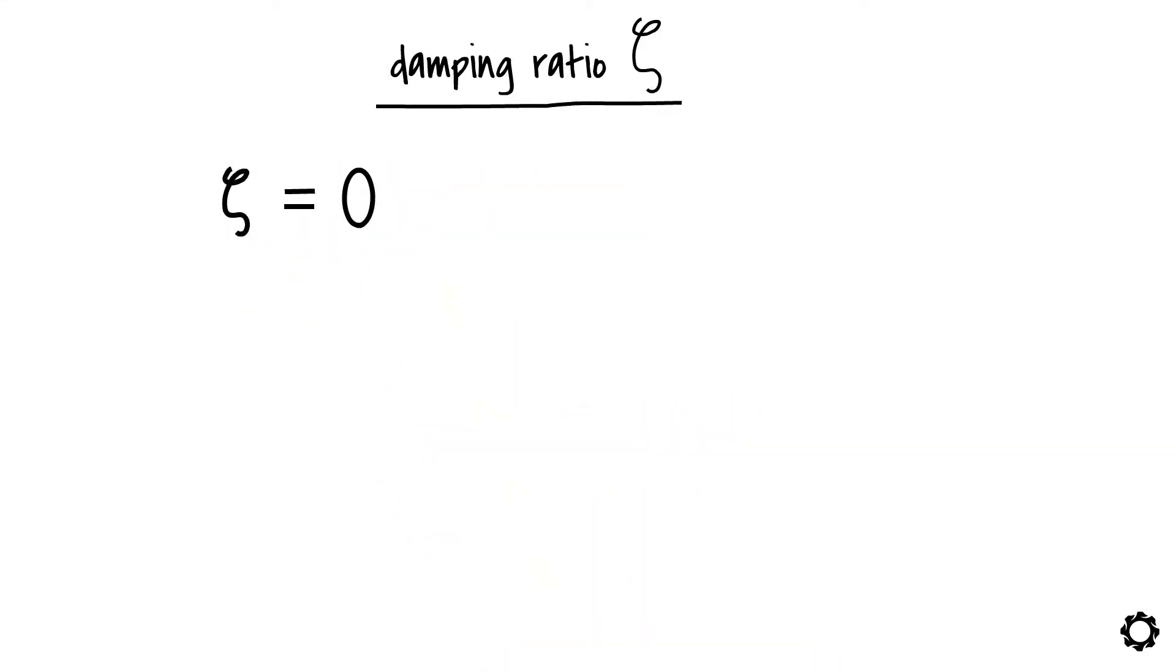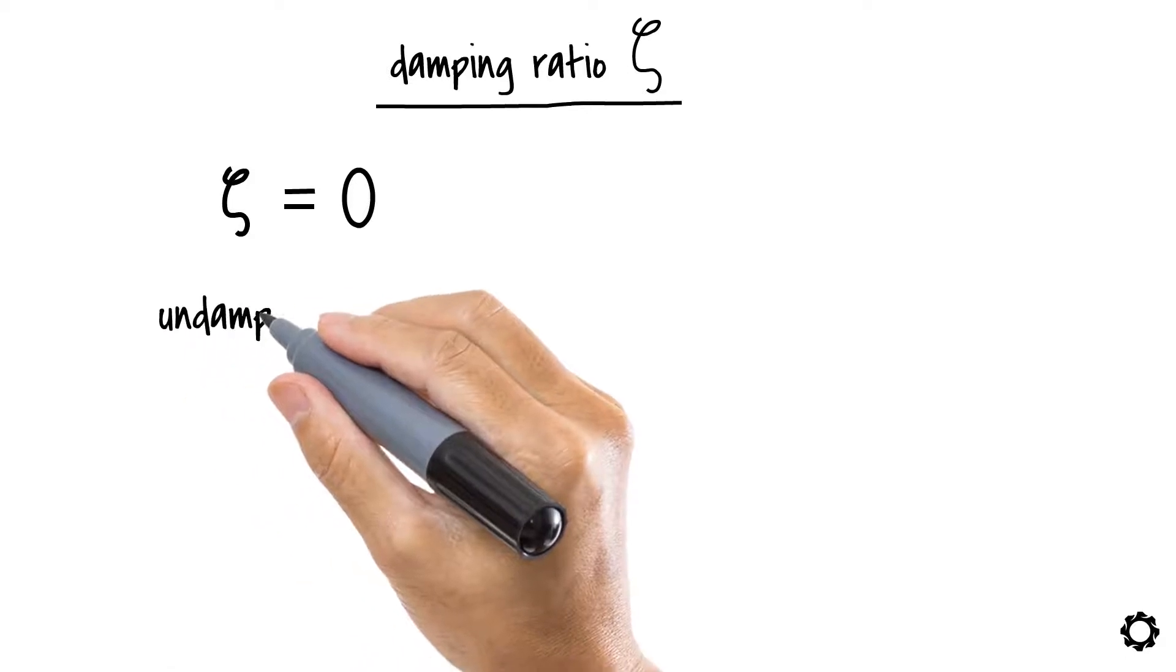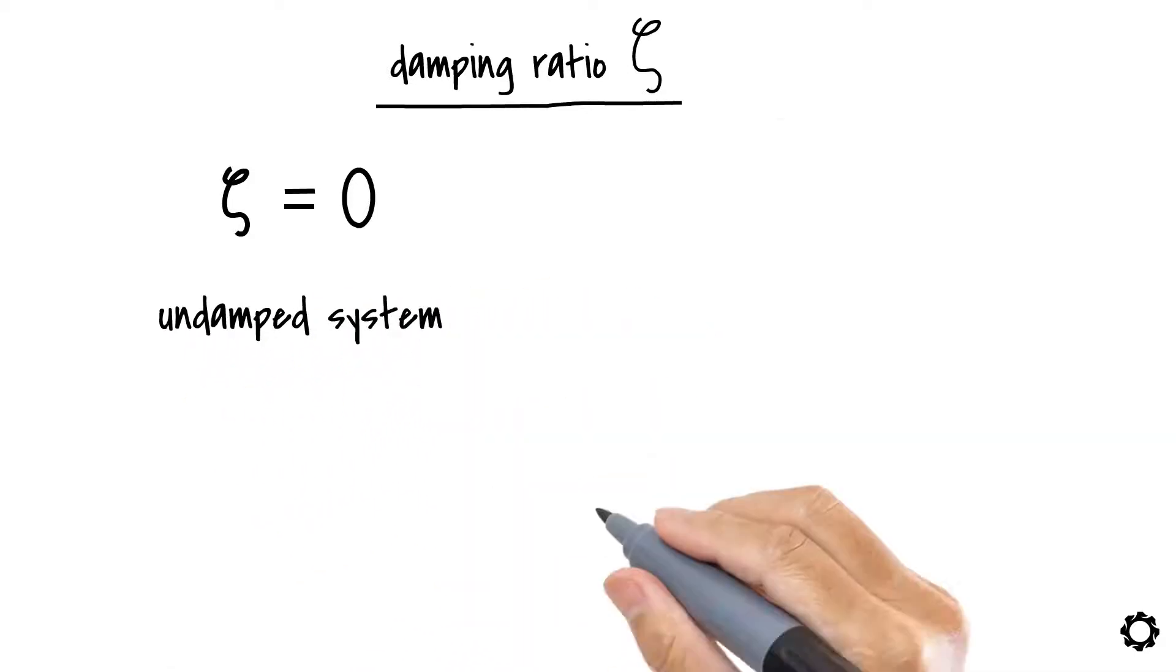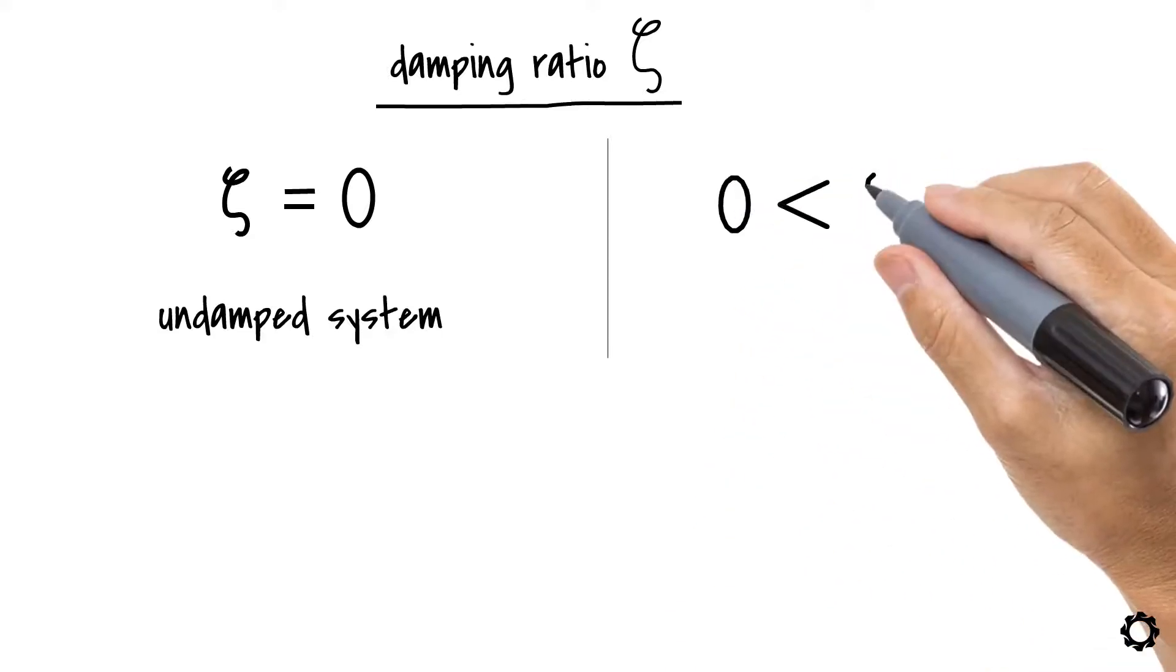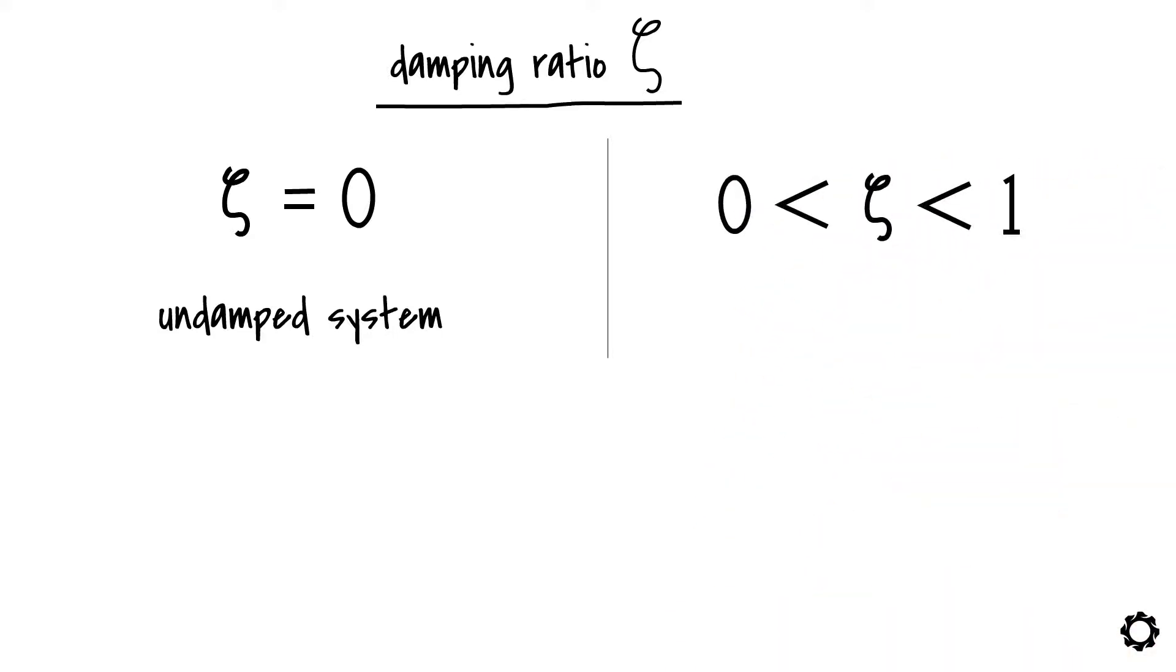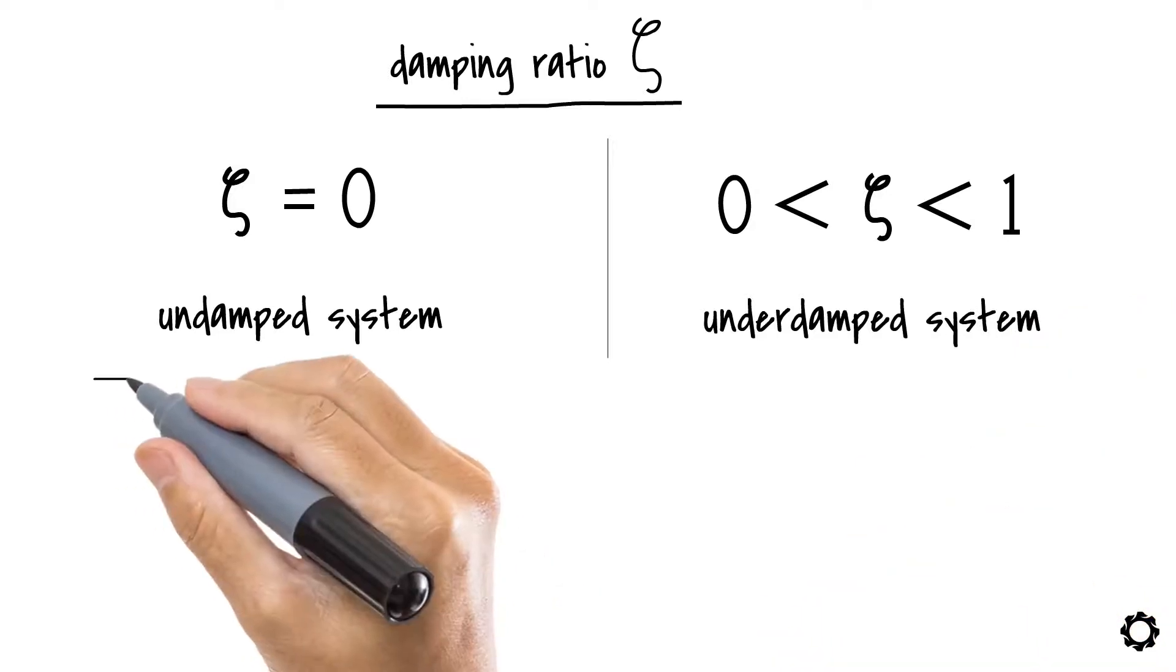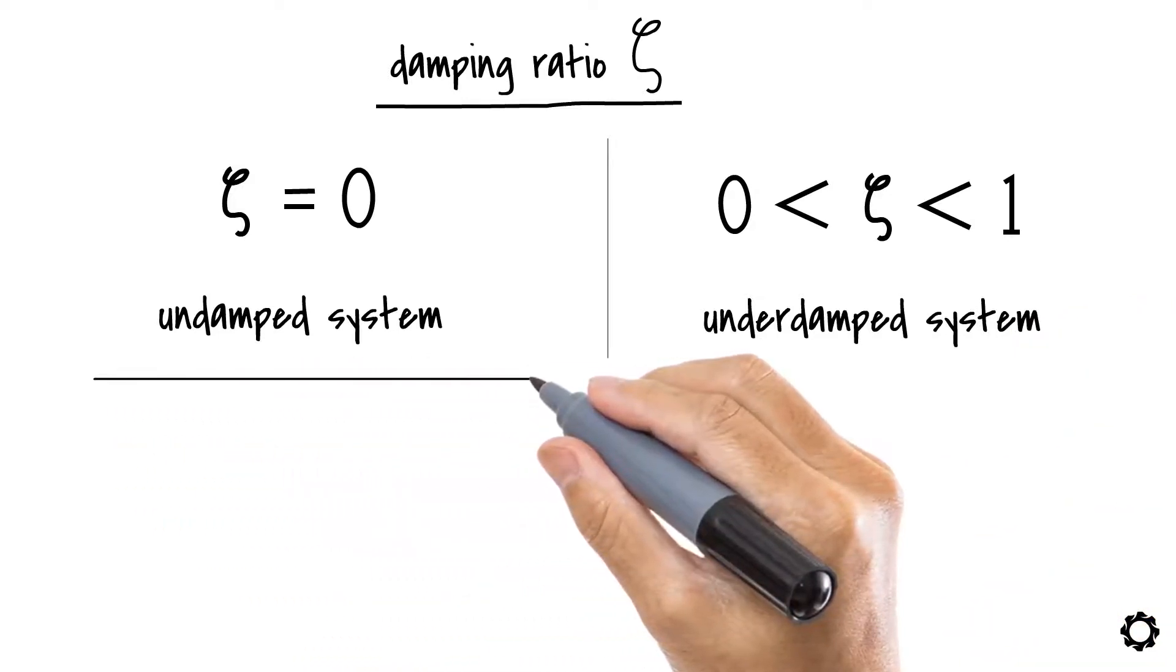If zeta is zero, then we are in the presence of an undamped system. So remember, zero ratio, zero damping. If zeta is larger than zero but smaller than one, we say that the system is underdamped. I would say under one, underdamped. You're getting it, right?